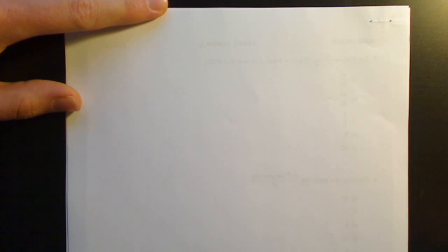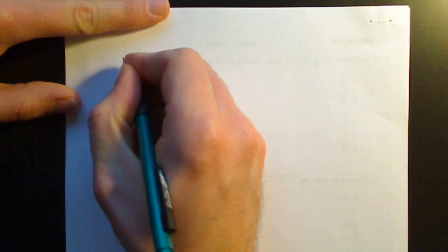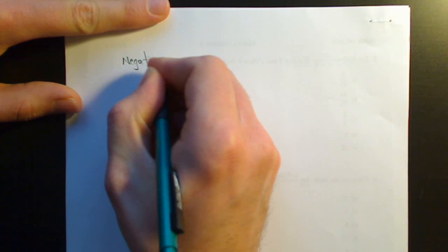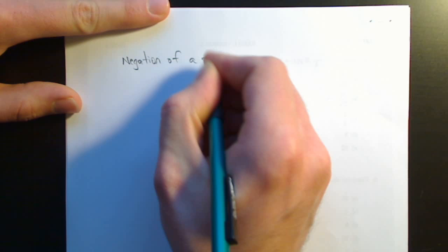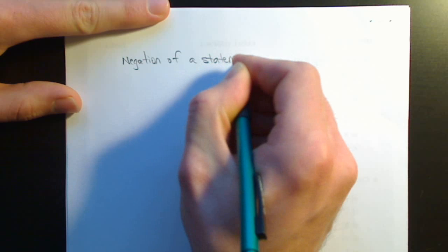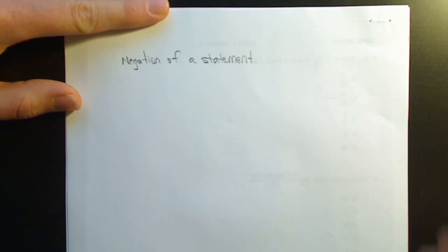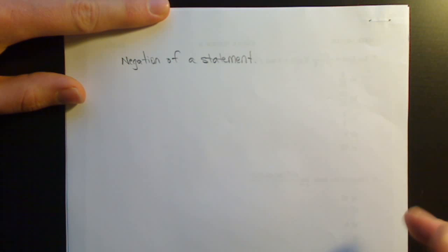Next, I want to talk a little bit about the negation of a statement. Negation of a statement. We've used negations a bit. This is using not for a statement. But if it's a compound statement, these things get a little bit more complicated than just De Morgan's Laws.